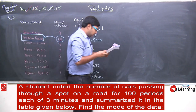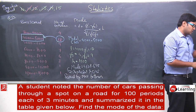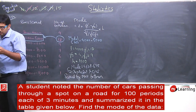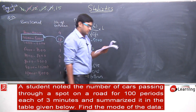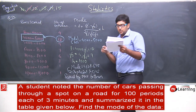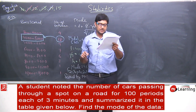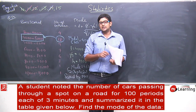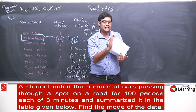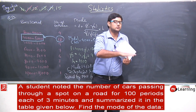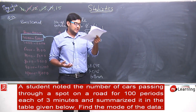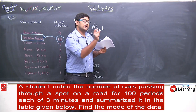Question 15: A student noted the number of cars passing through a spot on a road for 100 periods, each of 3 minutes, and summarized it in a table. For example, from 12:00 to 12:03 is 1 period, 12:03 to 12:06 is 2nd period, and so on. He made 100 such periods and noted the number of cars passing in each.